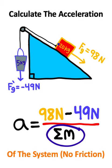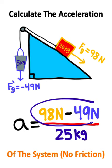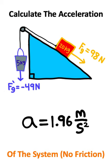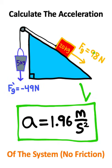And the total mass of the system is going to be 20 plus 5, or 25 kilograms. 98 minus 49 is 49, and 49 divided by 25 is 1.96. So the acceleration is 1.96 meters per second squared.